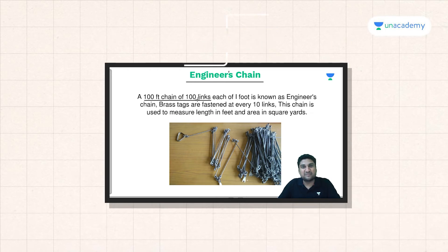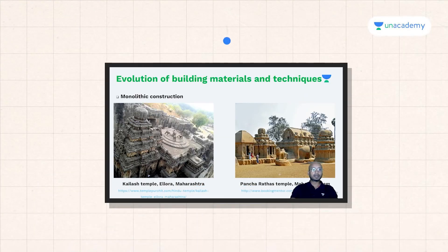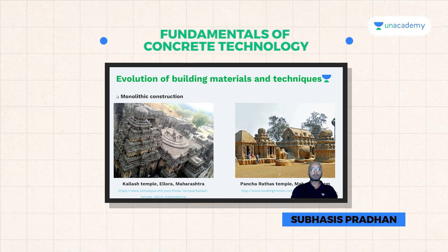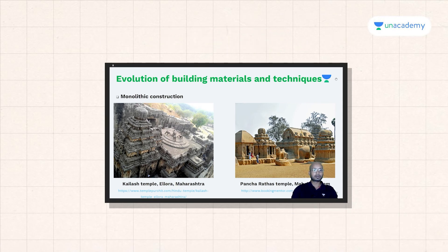We can see two very good examples of monolithic constructions. One is the Kailash Temple present in Maharashtra, and another is the Pancharatha Temple present in Mahabalipuram, Tamil Nadu. Both structures are actually made of a single stone — all these carvings are made of a single stone. The Kailash Temple is the largest structure carved out from a single stone.